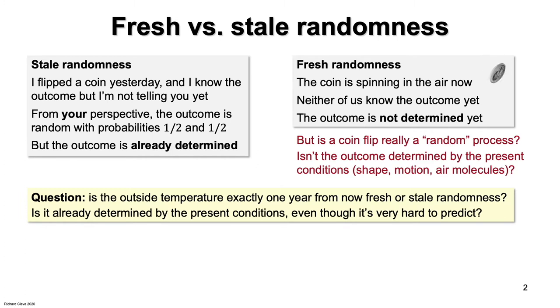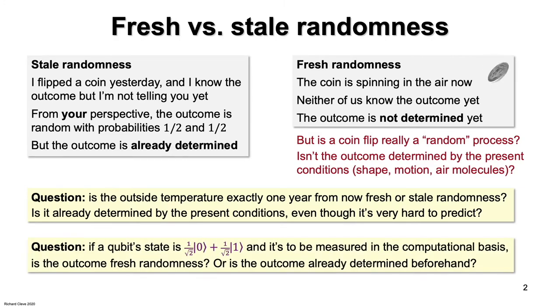All this discussion is a lead-in to the question that I really want to discuss, which is, what happens if a qubit in the plus state is measured? Is the outcome of that fresh randomness or stale randomness?